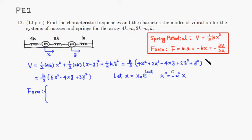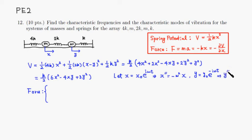We do the same for y — writing y as y₀ e^(iωt) with the same frequency ω. Taking the second derivative of y twice with respect to time gives −ω²y.